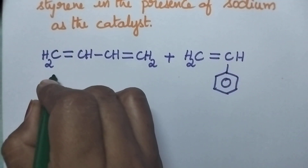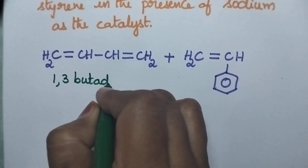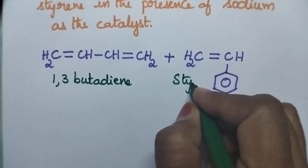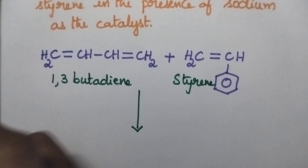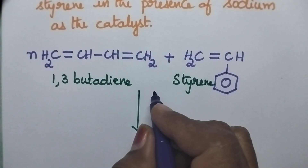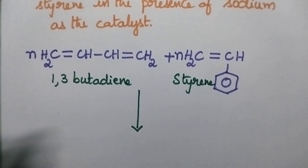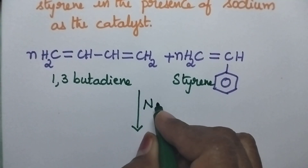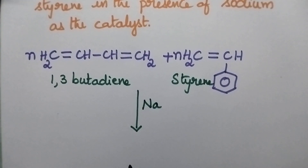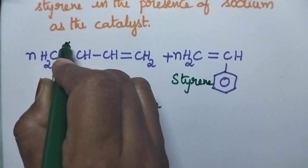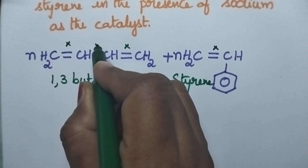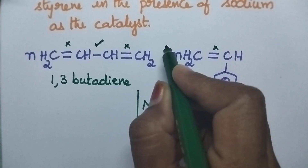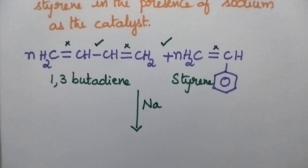So 1,3-butadiene undergoes copolymerization with styrene in the presence of sodium as the catalyst and results in the formation of Buna S rubber. During the formation of Buna S rubber, cleavage of the double bonds takes place, resulting in the formation of a new double bond, and the two molecules are joined.